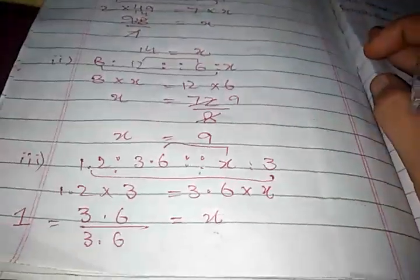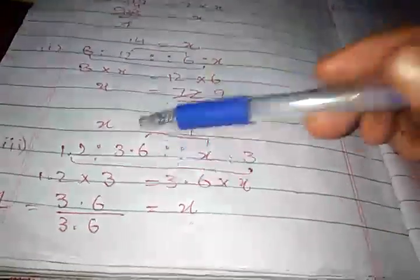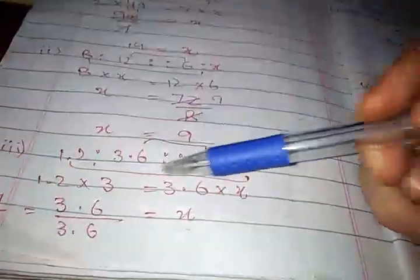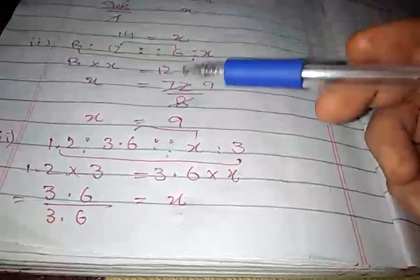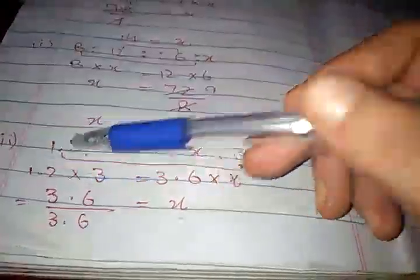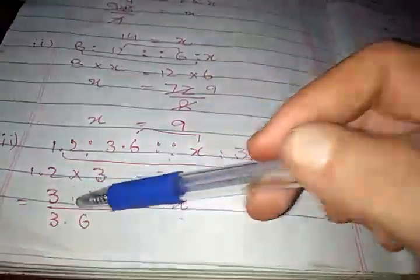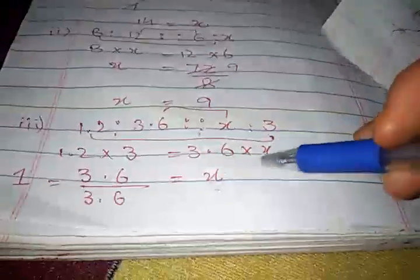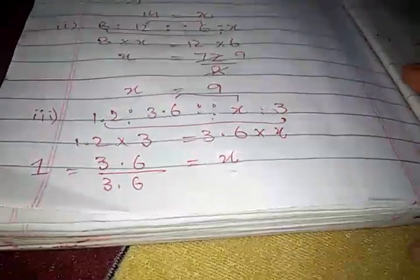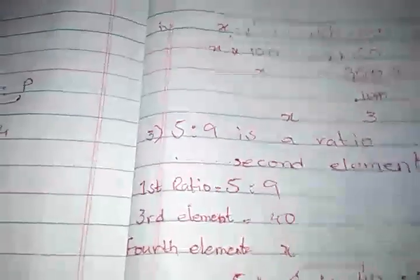Number 2 is 1.2 ratio 3.6 proportion X ratio 3. 1.2 is multiplied by 3, and 3.6 is multiplied by X. 1.2 × 3 = 3.6. Since 3.6 cannot be multiplied with X, 3.6 is divided by 3.6. The value of X is 1.